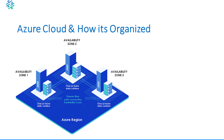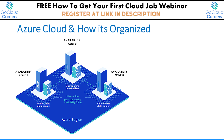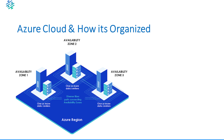An Azure region is a very large geographic area — think a continent or part of a continent. Think of an availability zone as a data center inside of that large geographic region. As you can see in this graphic, we've got a blue box which refers to this big large geographic region, and on this region we have multiple buildings. Each building represents a data center, and the data center is referred to as an availability zone.